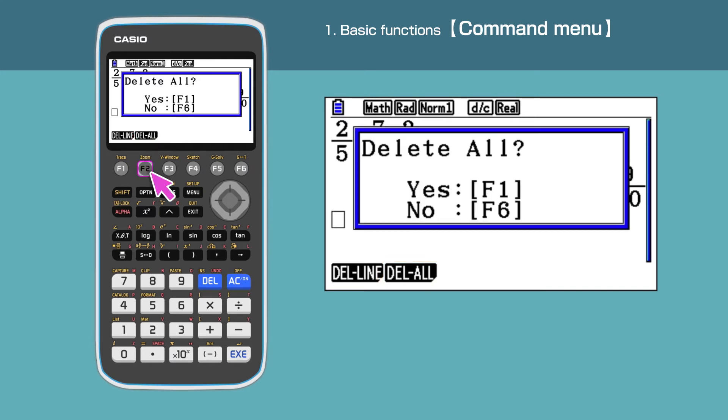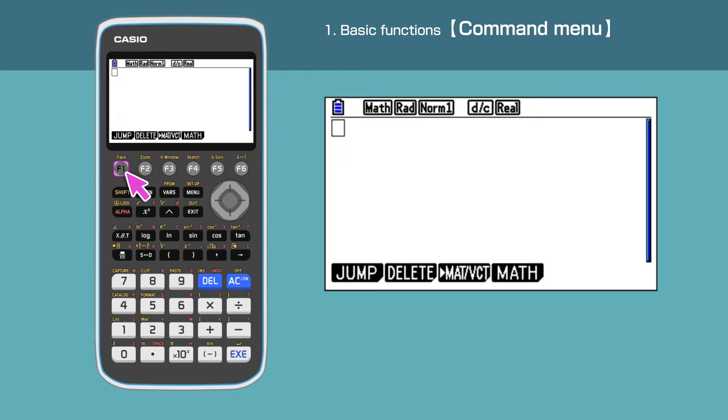The next basic instruction is how to select keys represented in different colors. On the CG50, most keys perform several functions, and each function is linked to a color.